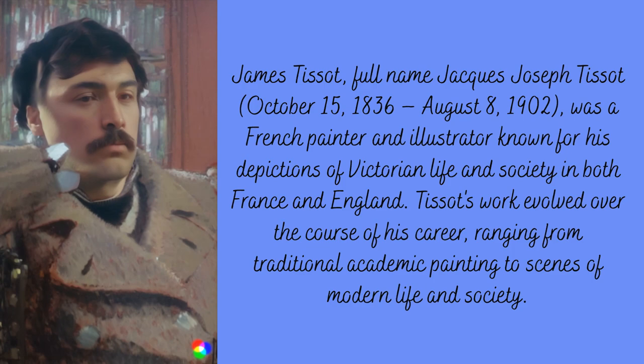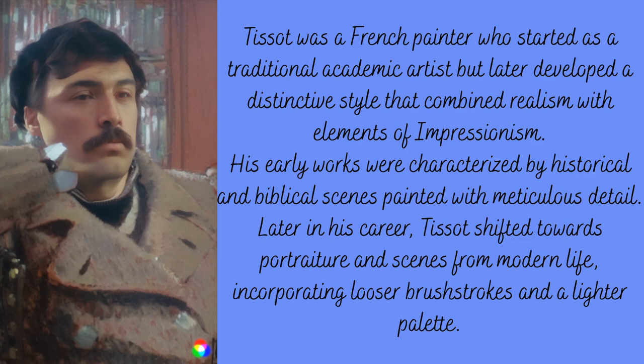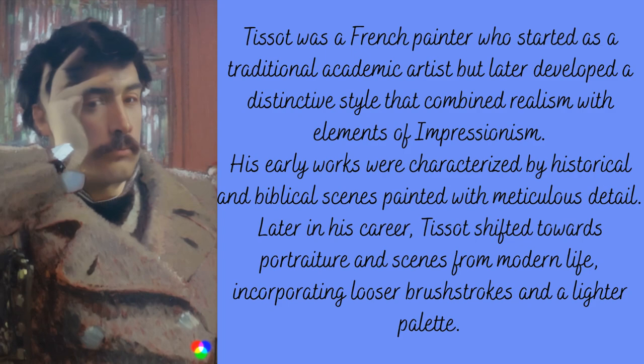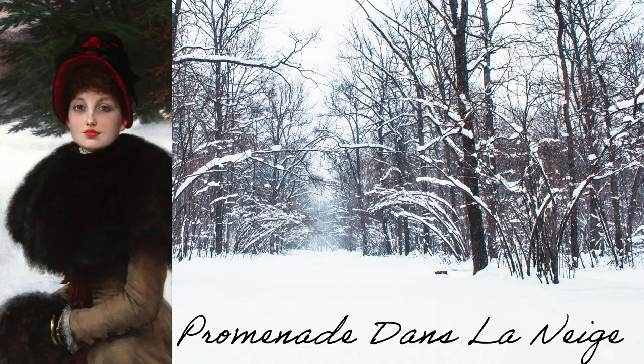James Tissot was a French painter and illustrator known for his depictions of Victorian life and society in both France and England. Tissot's work evolved over the course of his career, ranging from traditional academic painting to scenes of modern life. He later developed a distinctive style that combined realism with elements of Impressionism. His early works were characterized by historical and biblical scenes painted with meticulous detail, while later in his career he shifted towards portraiture with looser brushstrokes and a lighter palette.